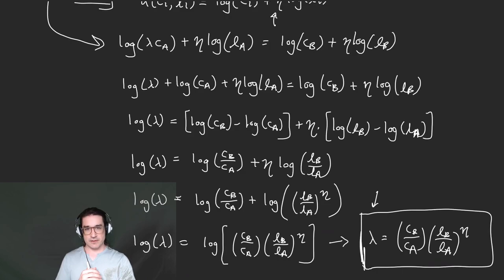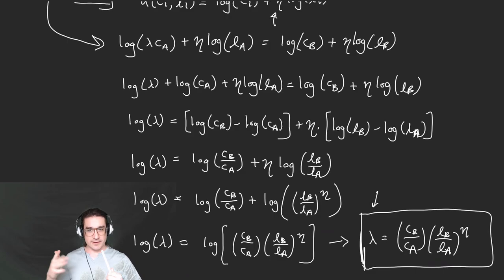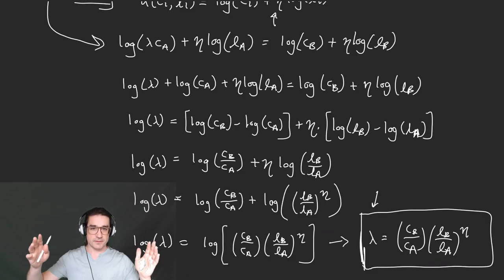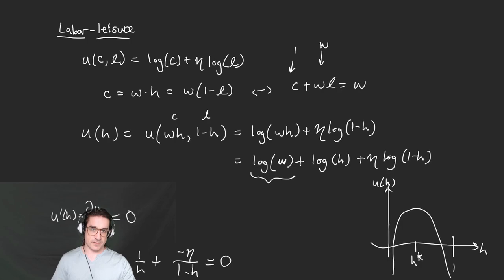We can use this lambda factor to compare any two countries or any two time periods. We could do a cross-sectional analysis comparing countries in 2018, or a time-series analysis within a country — like the US in 2020 versus 1970, with different consumption and hours worked implying different leisure levels. It's like a grid of time and country — we can go in either direction. The remaining question is: what about eta?